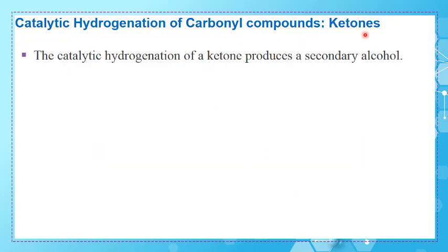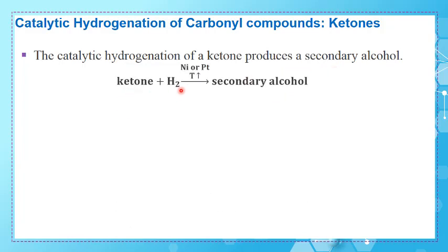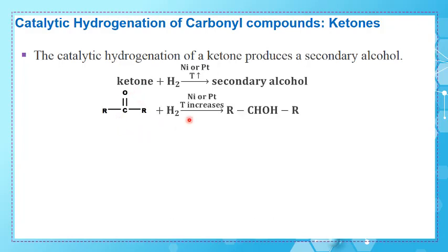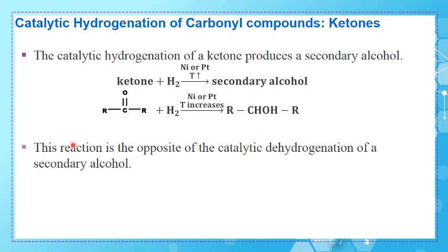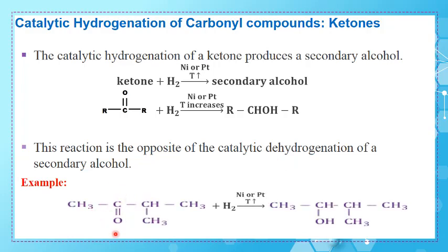Now, the catalytic hydrogenation of carbonyl compounds for ketones. Ketones also undergo catalytic hydrogenation, but they produce a secondary alcohol. So ketone plus hydrogen gives a secondary alcohol, always using the same catalyst. Here is the structural formula: the ketone plus H₂ gives a secondary alcohol, with two alkyl groups attached to the carbonyl carbon. This reaction is the opposite of the catalytic dehydrogenation of a secondary alcohol.